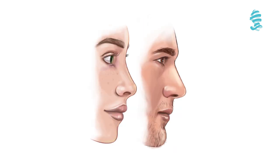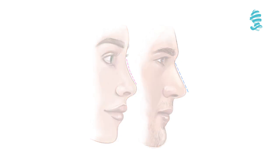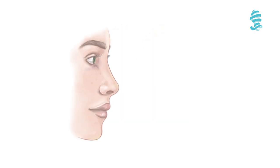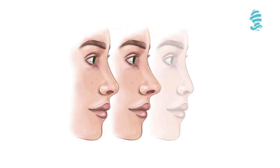In profile, ideally the dorsal profile should be straight in males, whereas it can be slightly curved in females. Tip projection is the distance of the tip from the face; it can be normal, over-, or under-projected.